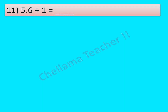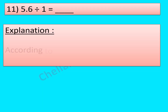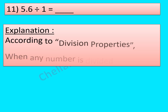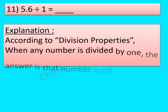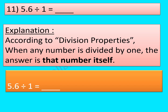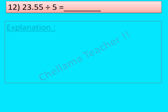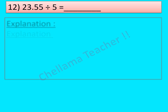Question No. 11: 5.6 ÷ 1 is equal to dash. According to division properties, when any number is divided by 1, the answer is that number itself. So 5.6 ÷ 1 = 5.6. Question No. 12: 23.55 ÷ 5 is equal to dash. Let's see how to solve this step by step.